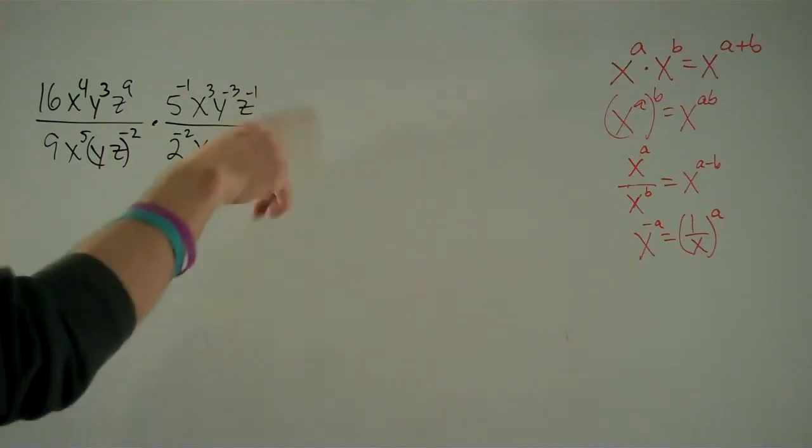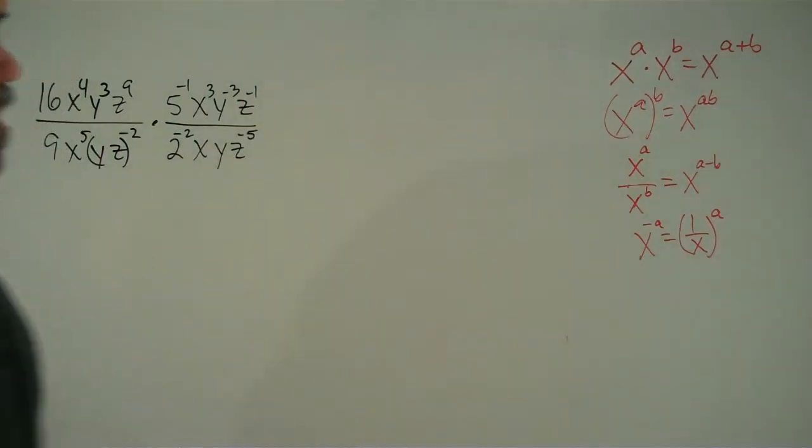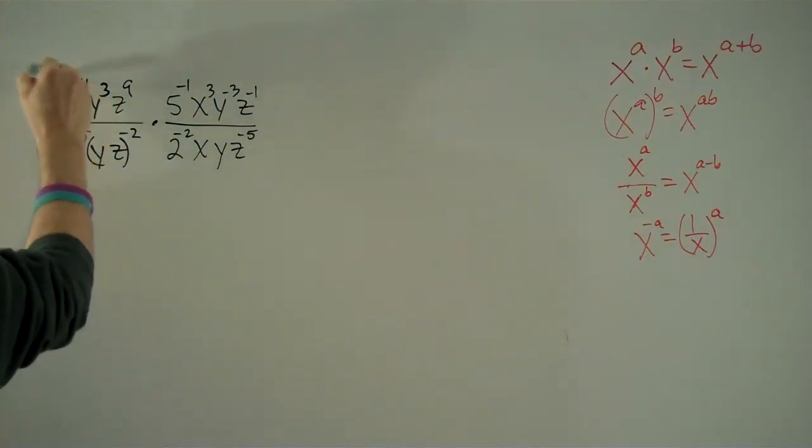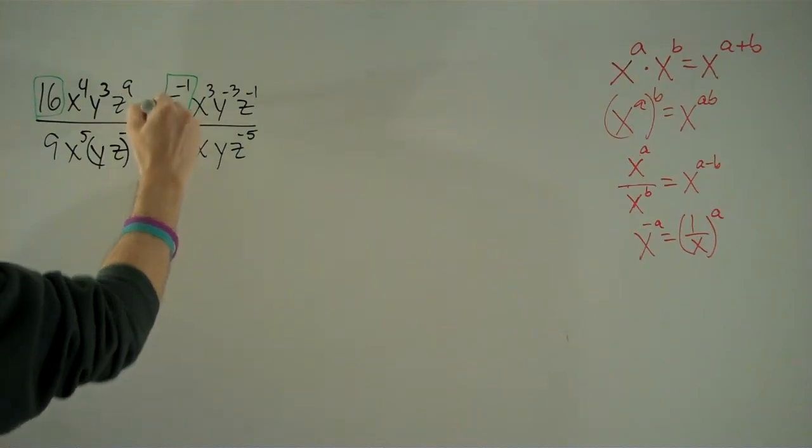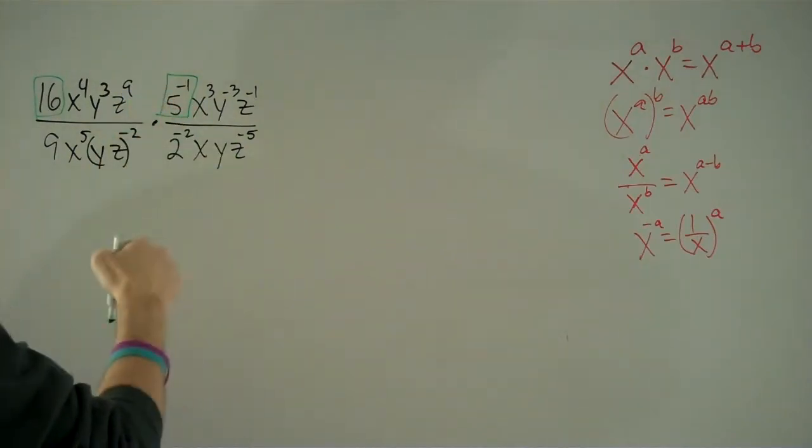So, over here to the right, I've written some exponent identities, things that we should always keep in mind when manipulating problems like this. So to start, I think that what we ought to do is look at our numbers. We've got 16, we've got 5 to the negative 1, which we know to be 1 fifth.